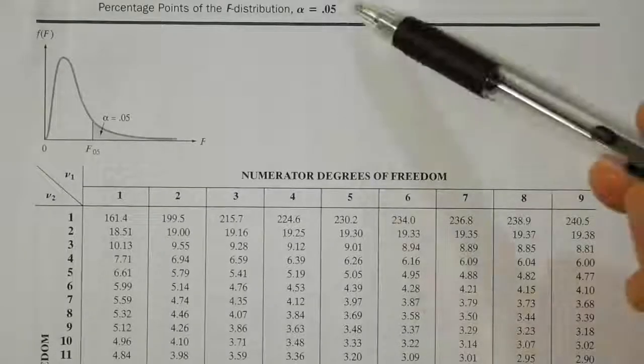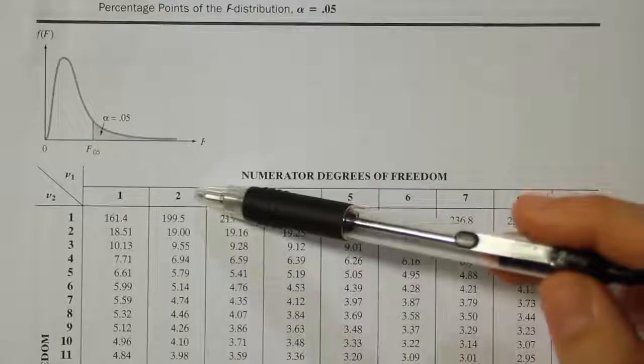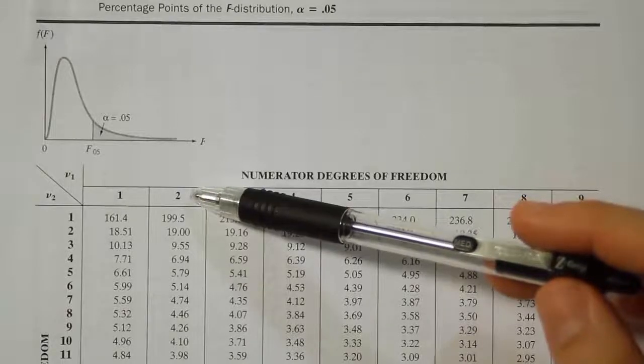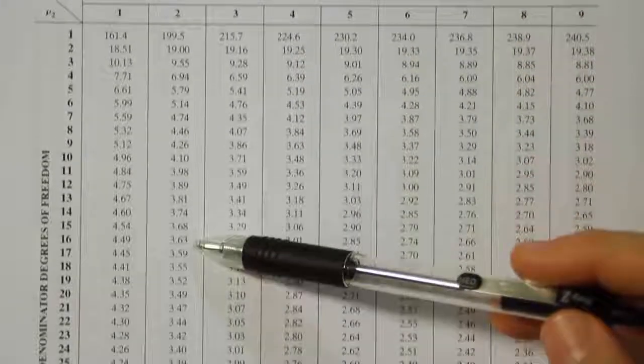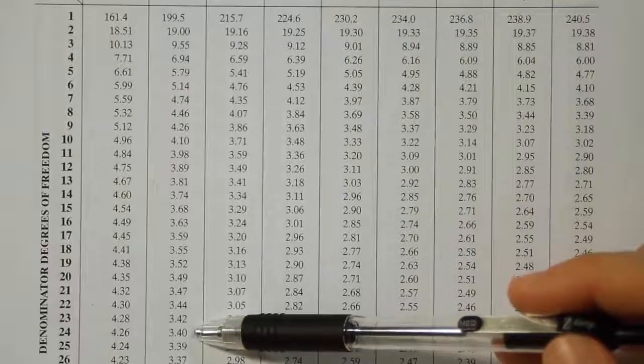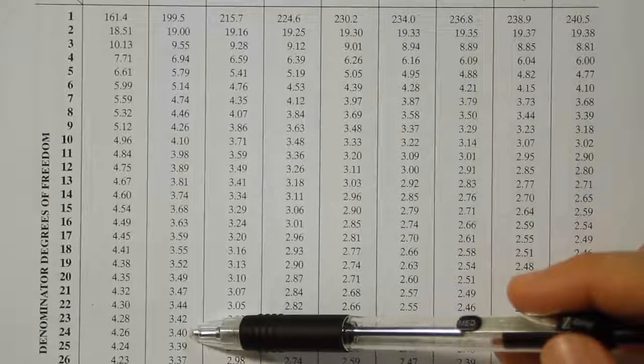So we're on the 0.05 table. We have to find numerator degrees of freedom 2 and denominator degrees of freedom 24. So all the way down we find the answer 3.40.